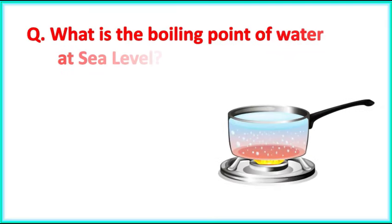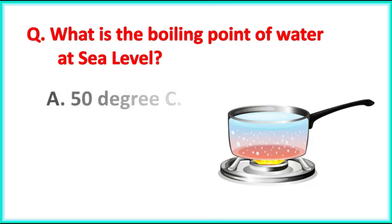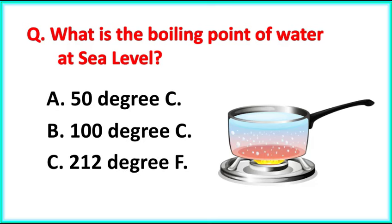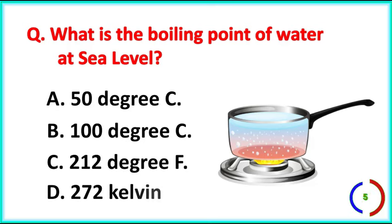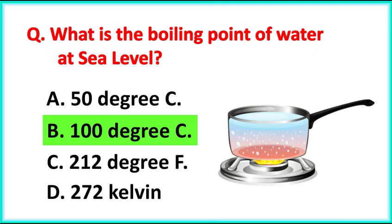What is the boiling point of water at sea level? The correct answer is Option B. 100 degrees Celsius.